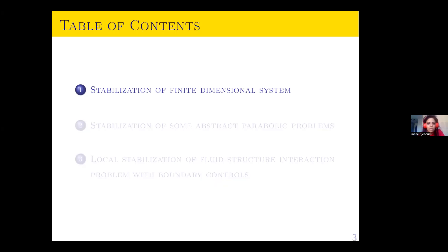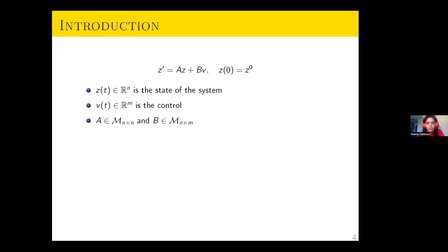This talk will be divided into two parts. The first part is an introduction where I will talk about stabilization properties for finite dimensional systems, then the stabilization of some abstract infinite dimensional problems. The second part will be devoted to the application of this theory for the local stabilization of a flow-structure interaction problem.